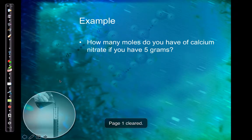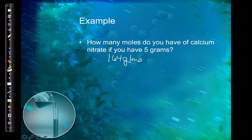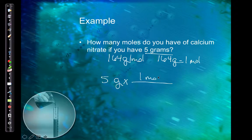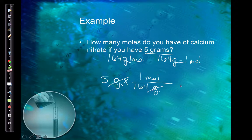So how many moles do I have if I have 5 grams of calcium nitrate? I know the molar mass is 164 — we just did that. So this is a conversion factor between grams and moles. If I have 164 grams, that's equal to 1 mole. I have 5 grams and I need to convert to moles, so I'll use my molar mass as my conversion factor. Grams goes on the bottom, moles on top. It's just 5 divided by 164, which gives me 0.03 moles.